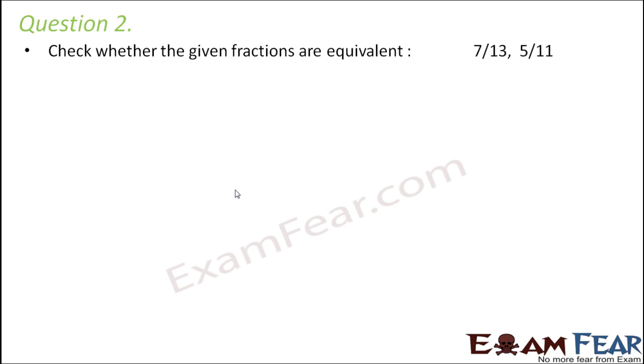Question number 2. Check whether the given fractions are equivalent or not. So what are the given fractions: 7 by 13 and 5 by 11. So whenever we have to check if they are equivalent or not, the first thing that we do is we try to convert them into their simplest form. Now let us first see if they are in their simplest form or not.